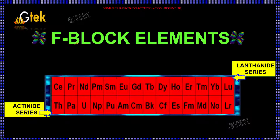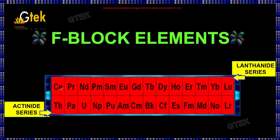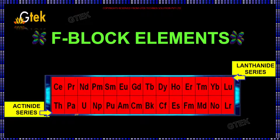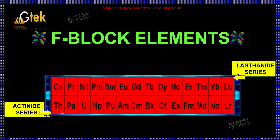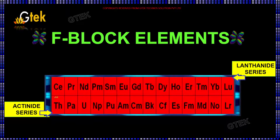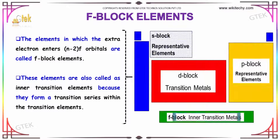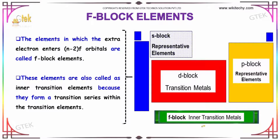This is about the F-block elements. F-block elements are also called inner transition elements. They include the lanthanide and actinide series. The elements in which the extra electrons enter the (n-2)f orbital are called F-block elements. These elements are also called inner transition elements because they form a transition series within the transition elements.